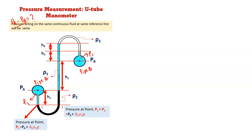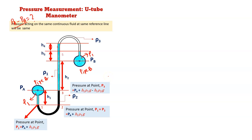Next, I have to calculate P_3. If we go in the upward direction, pressure will decrease. So P_3 will be P_A plus H_1·ρ_1·G minus H_1·ρ_2·G, which equals P_2 minus H_1·ρ_2·G.